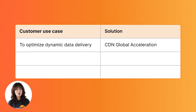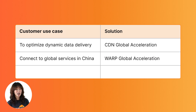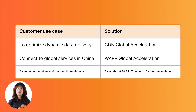To sum up, our solutions are designed to meet your specific needs and can be selected a la carte. If you need to optimize dynamic data delivery — whether it's API calls, R2 integrations, or special use cases within the China network zone — CDN Global Acceleration is the ideal choice. Looking to connect to global services across China with company-enforced policies? Choose Warp Global Acceleration. For managing enterprise networking or accessing global services from your China-based offices, Magic One Global Acceleration is your go-to solution. Thanks for watching — you can reach out to our sales team to learn more.